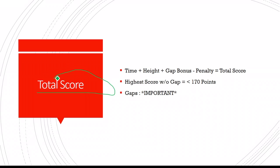So your total score right here would be your time score, your height score, your gap bonus minus your penalty equals your total score. So the highest score without gaps is 170 points, which is basically, let's say you get the full time score and the highest time score you get is 90. And then you add your perfect high score, which is 80, which equals 170.